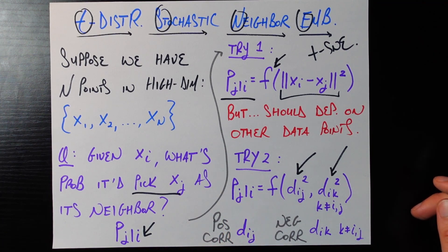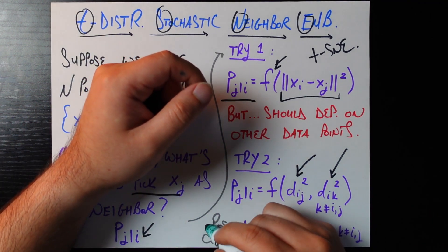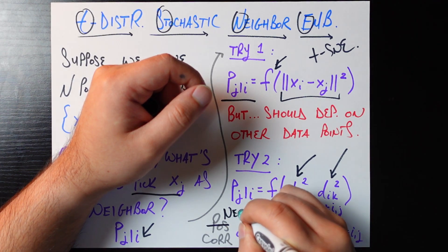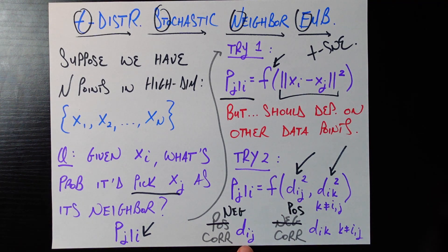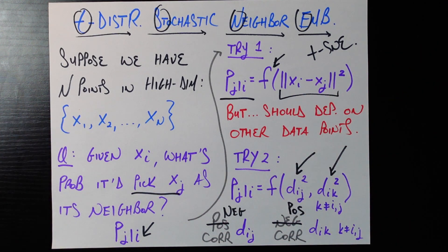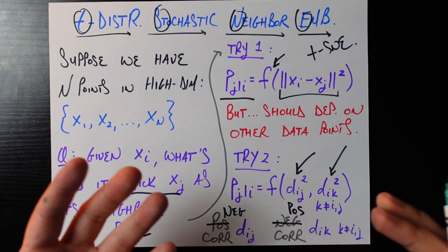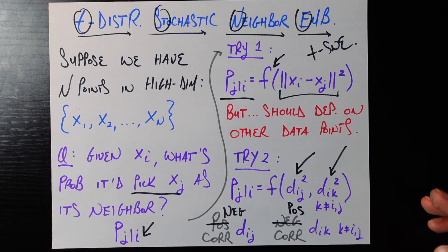Whatever function this is needs to have a couple of properties. The first is that the bigger the distance gets between i and j, the lower the probability I would pick that as my neighbor — it's negatively correlated. The second property is that for all the other data points not equal to i or j, if the distance to them gets bigger and bigger, then j becomes more and more attractive because it's relatively closer to me, and so my probability should go up. So what might such a function f look like?